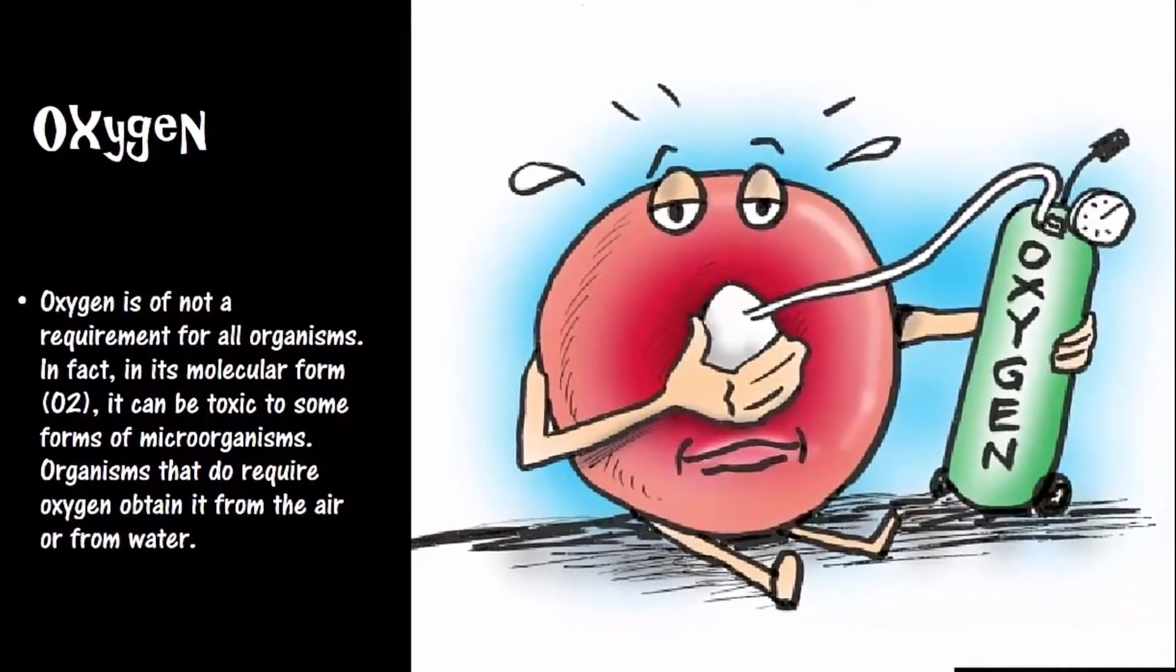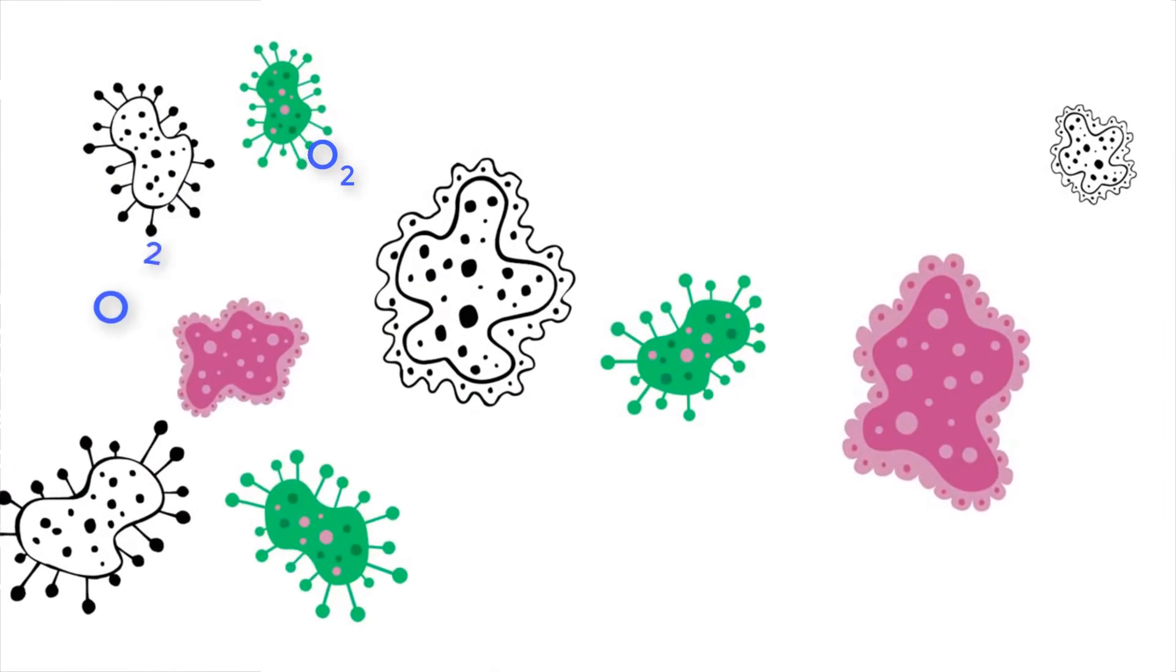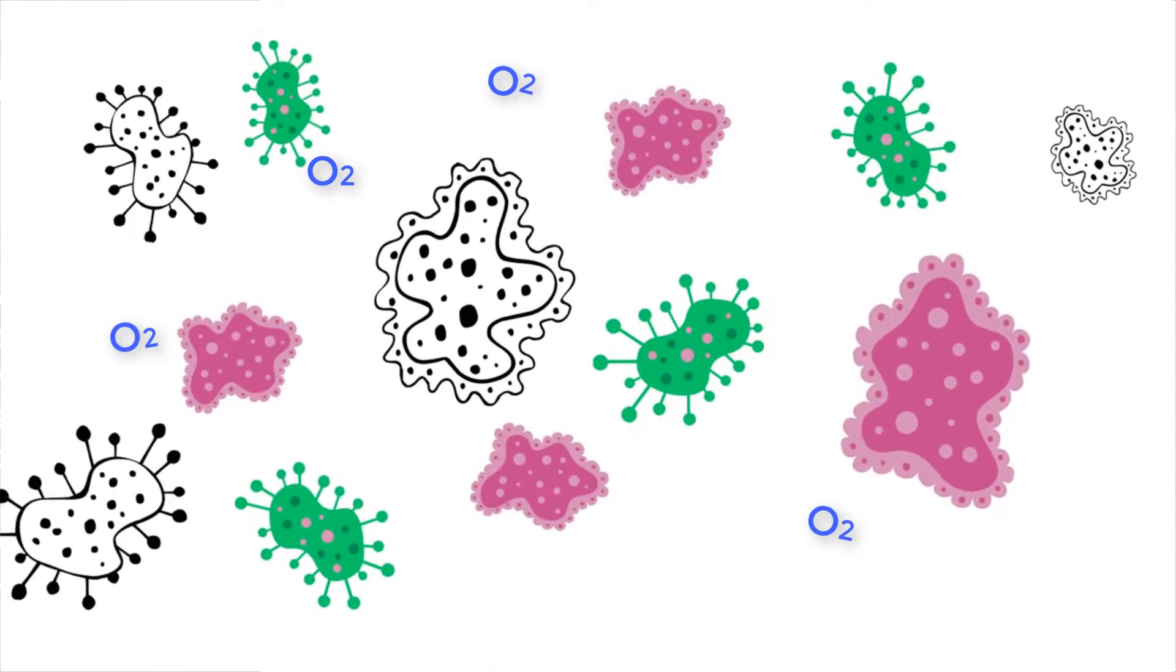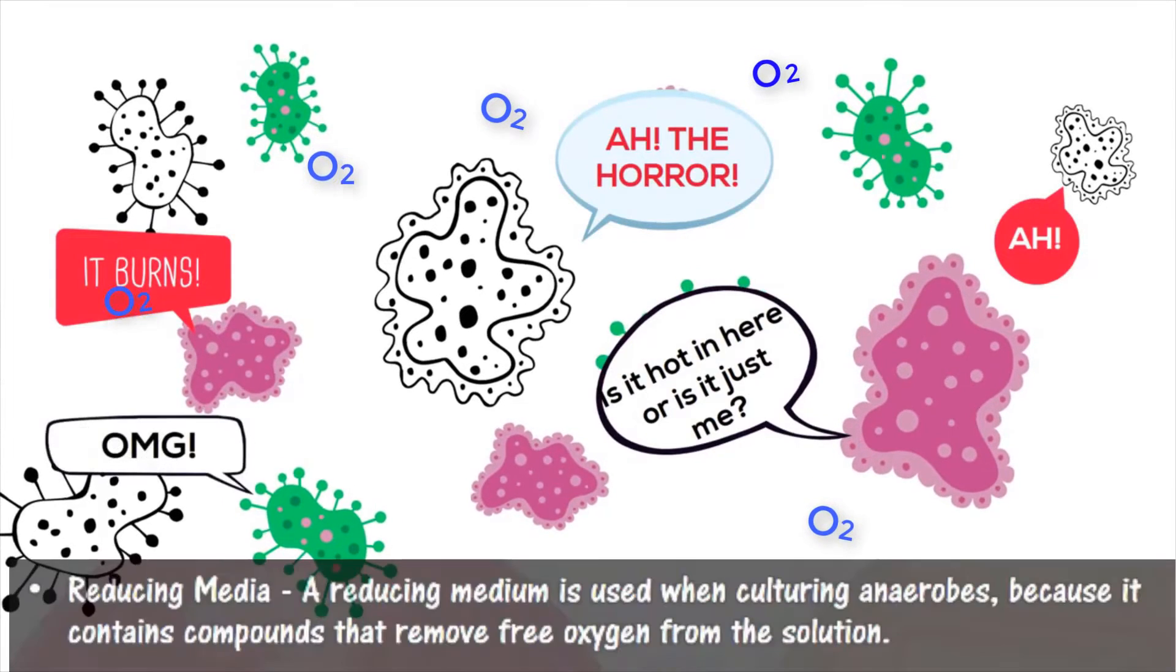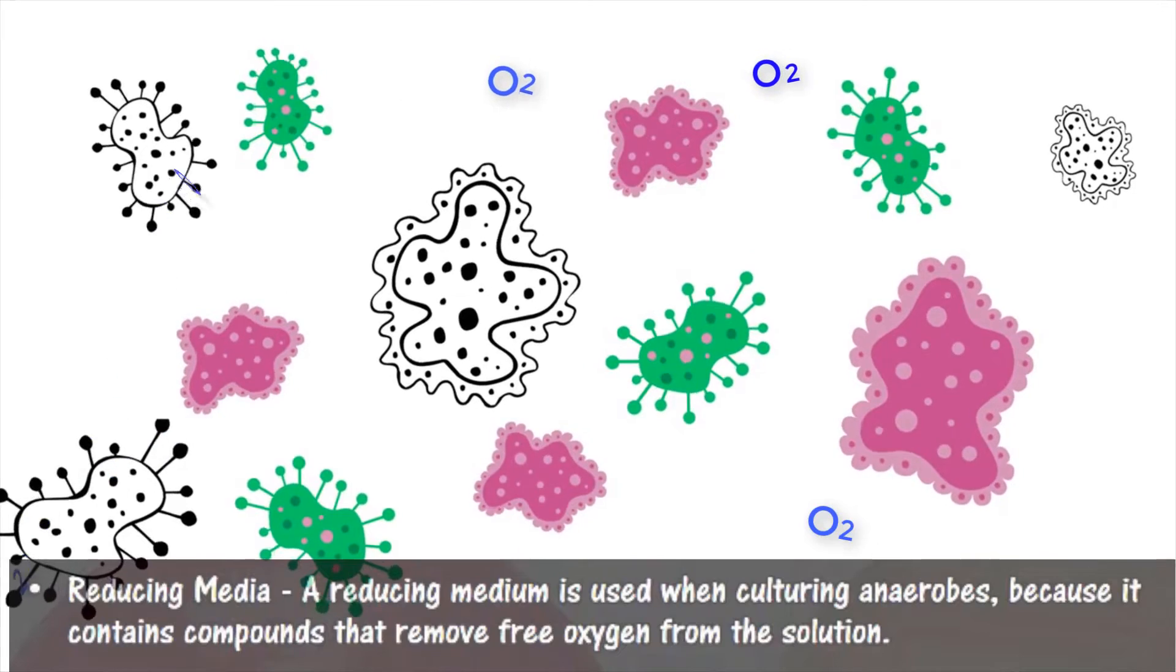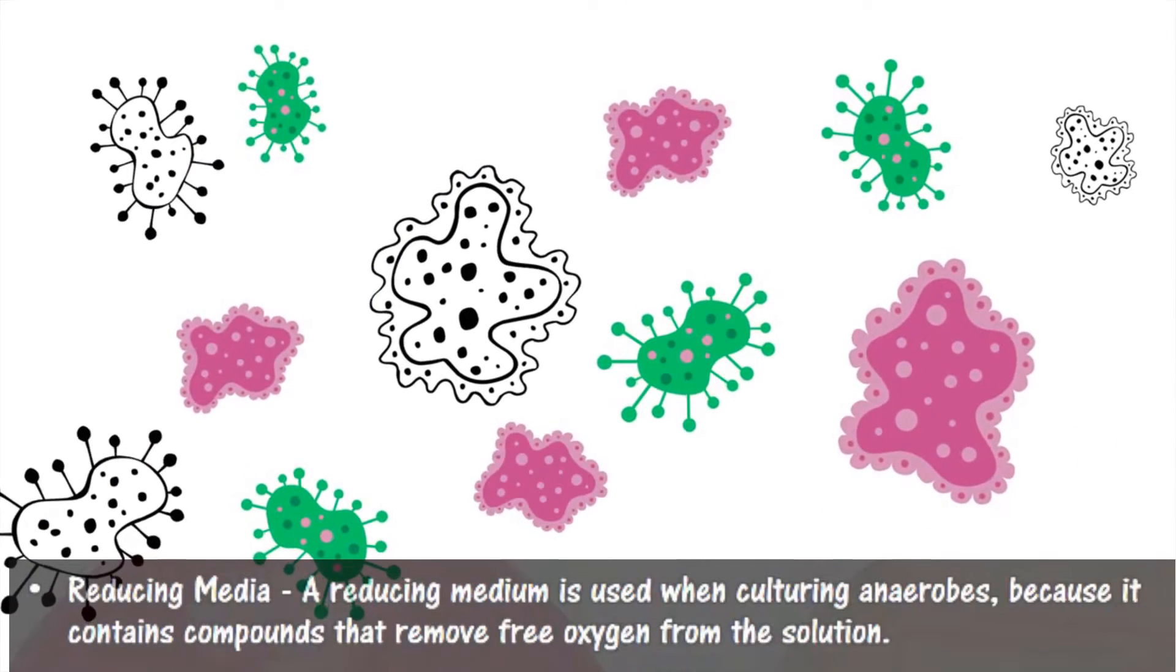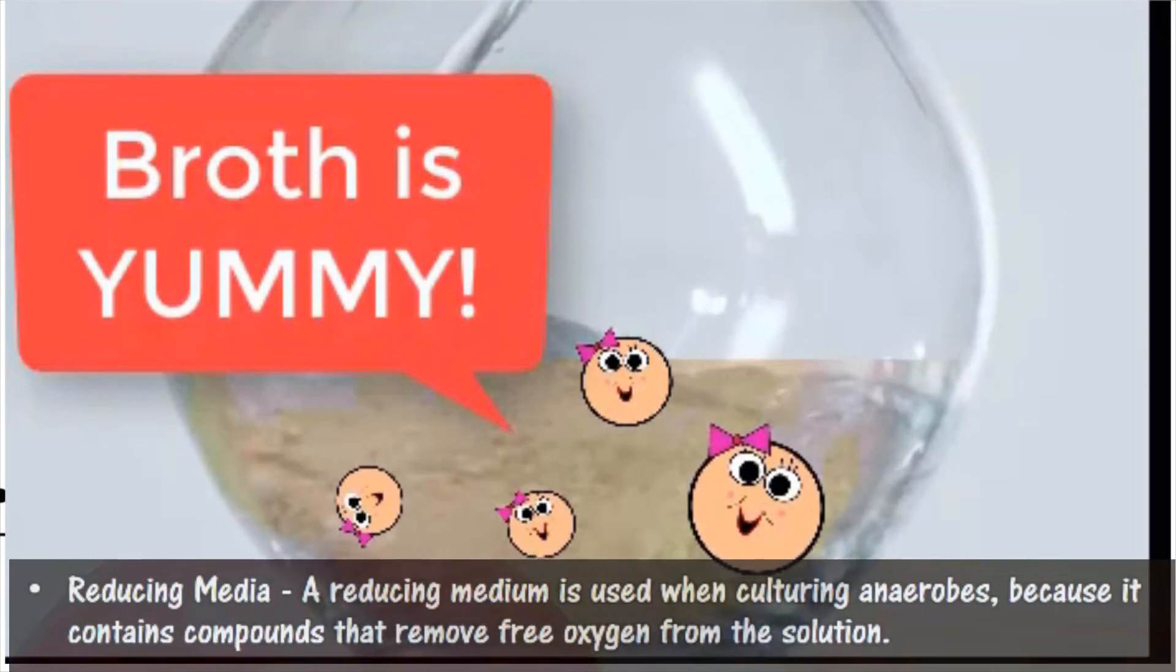Oxygen is not required for all organisms. In fact, in its molecular form, O2 gas, it can be toxic to some organisms. Reducing medium is used when culturing anaerobes because it contains compounds that remove free oxygen radicals from the solution.